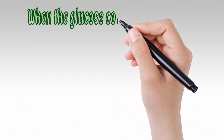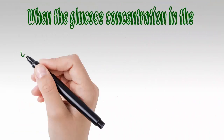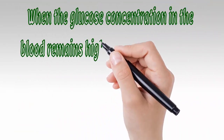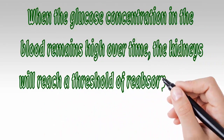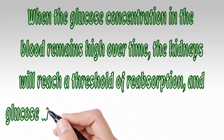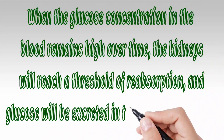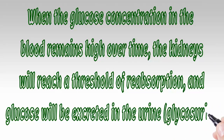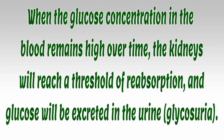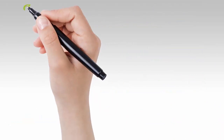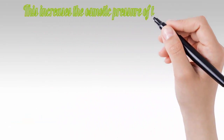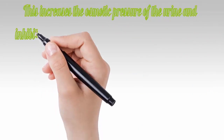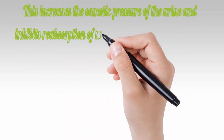When the glucose concentration in the blood remains high over time, the kidneys will reach a threshold of reabsorption and glucose will be excreted in the urine — glycosuria. This increases the osmotic pressure of the urine and inhibits reabsorption of water by the kidney.